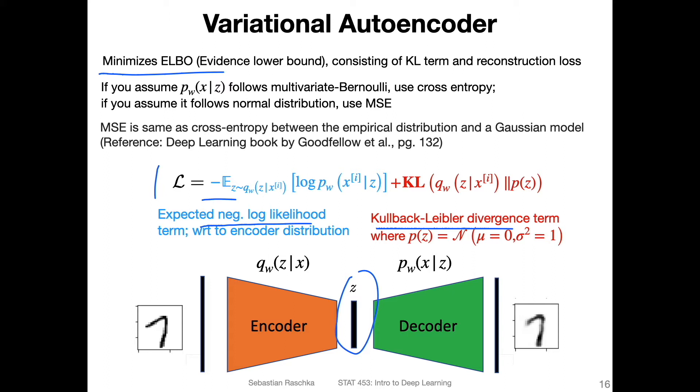But again, the details are not that important. If you have not encountered this before, don't worry about it too much. The big picture is that this is a reconstruction lost term. It's essentially the reconstruction difference between input and output distribution here. And the KL divergence is making sure that this one here is essentially standard multivariate Gaussian distribution.